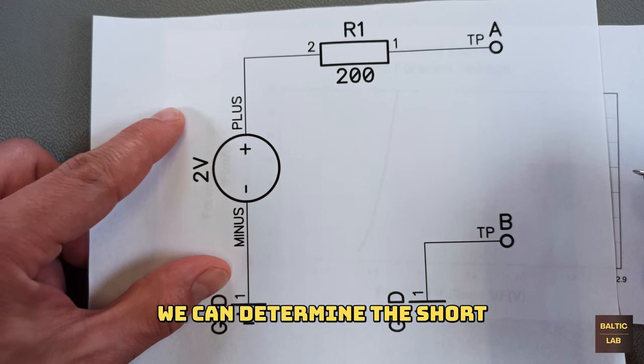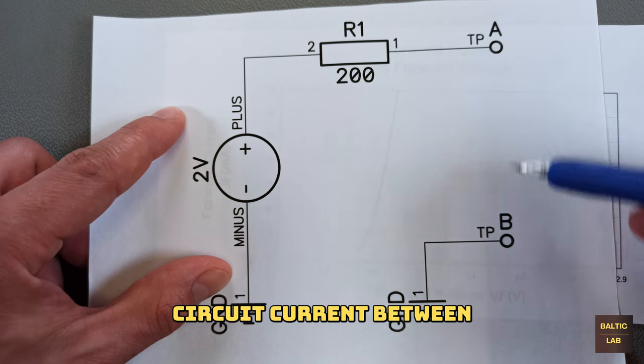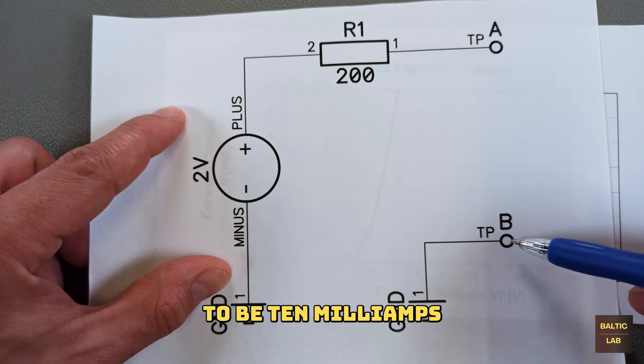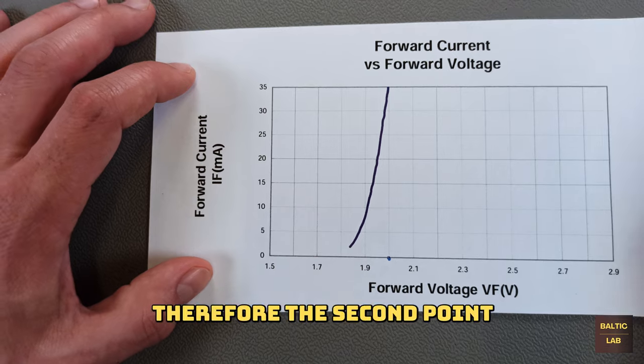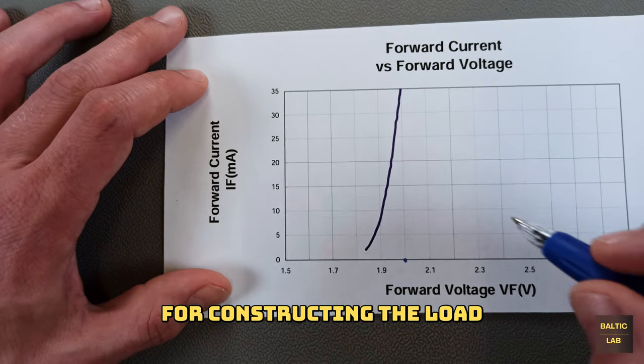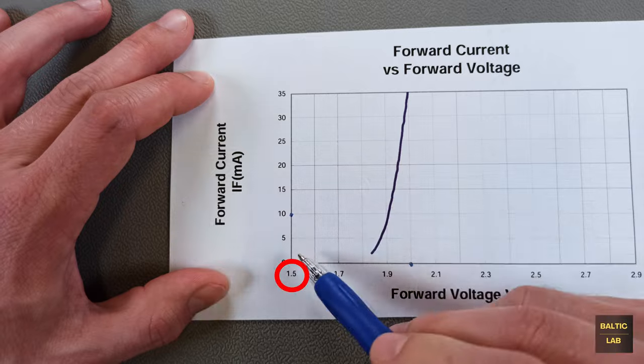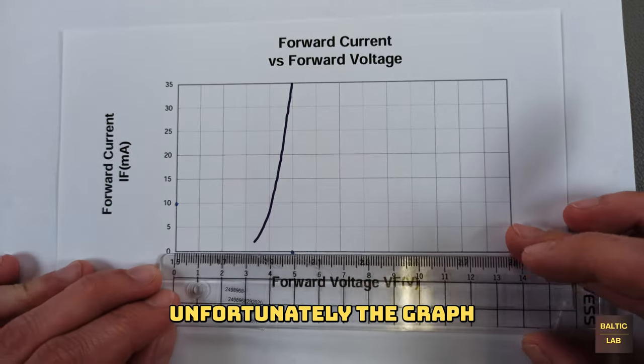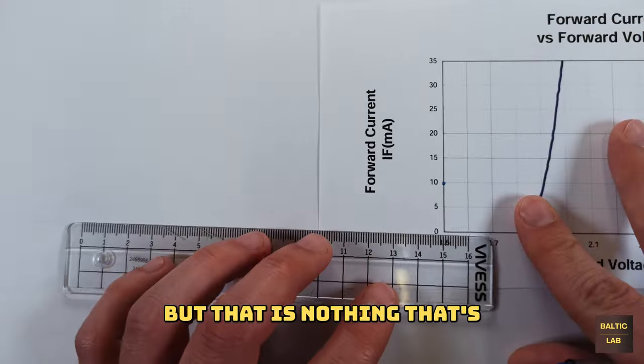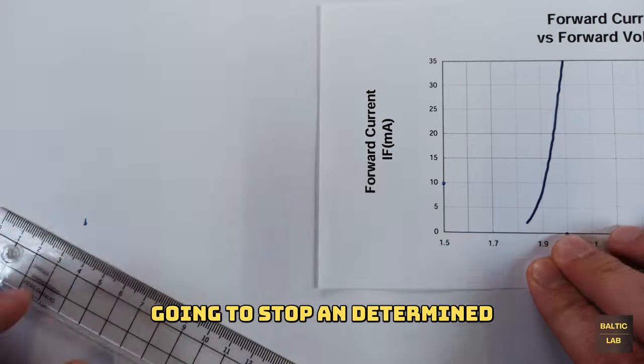The load line is constructed from the open circuit voltage which is 2 volts as we already previously determined and the short circuit current of our equivalent voltage source. Using Ohm's law we can determine the short circuit current between terminals A and B to be 10 milliamps. Therefore the second point for constructing the load line is 10 milliamps and 0 volts.